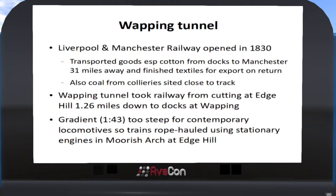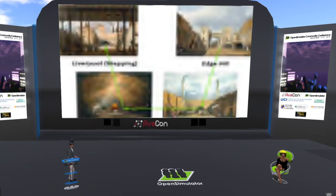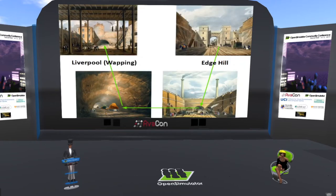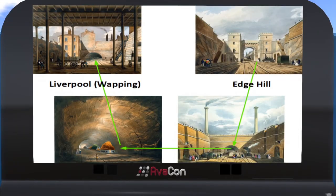The gradient down from Edge Hill, where the entrance to the tunnel was located, was too steep for the locomotives they had at the time. So instead they used stationary engines in a special place called the Moorish Arch, and these powered a rope haulage system to move the trains up and down. The Wapping Tunnel was the central one of three tunnels at the end of the cutting.